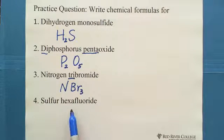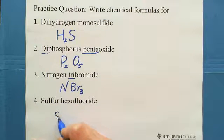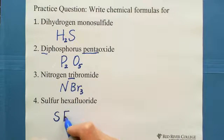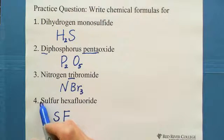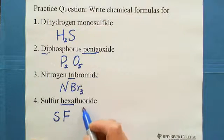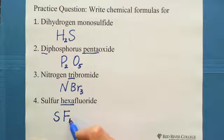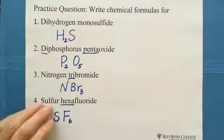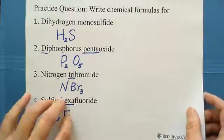Four: sulfur hexafluoride. Sulfur is non-metal, fluorine is non-metal as well. Sulfur has no prefix, meaning 1 — we don't need to write the 1. Hexa means 6, so write subscript 6 matching the prefix. So the formula for sulfur hexafluoride is SF₆.